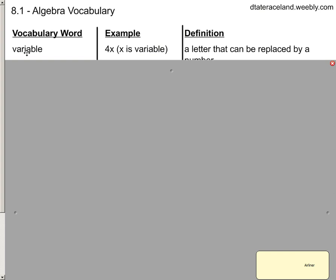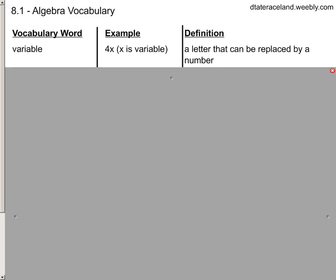First, variable - you should be pretty familiar with this. If we look at the example 4x, x is your variable. Basically it's a letter that can be replaced by a number. A lot of times it means we don't know what the number is. When we see a letter, we're not going to call it a letter, we need to call it a variable.